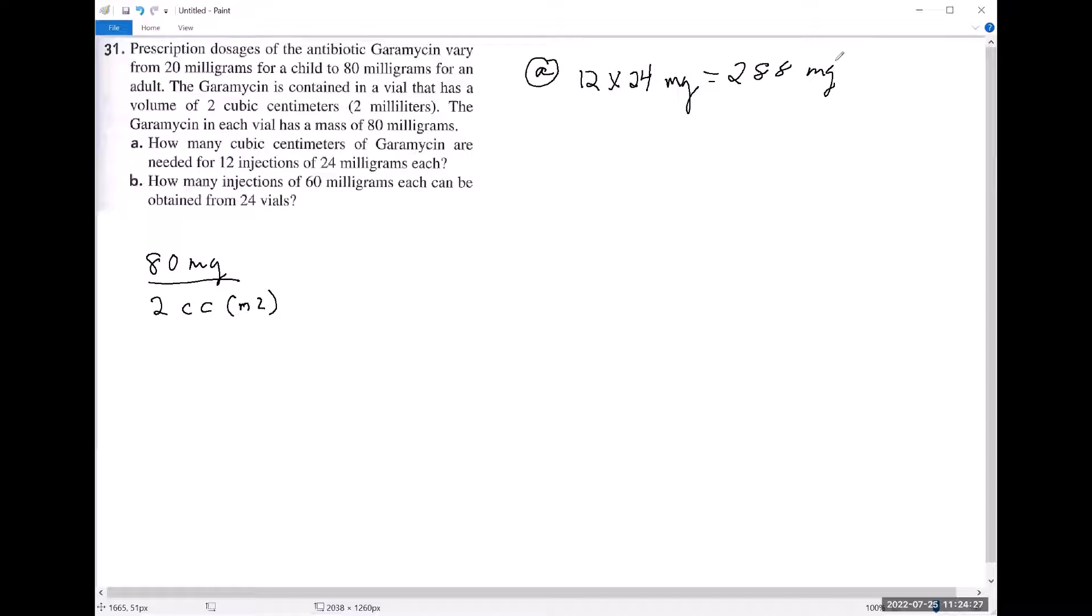I'm going to start with the fact that we need 288 milligrams. Then I'm going to take my relationship here and use the 80 milligrams on the denominator. I'm going to put the 80 milligrams on the bottom so these milligrams will cancel because